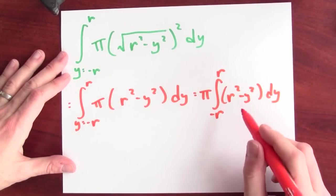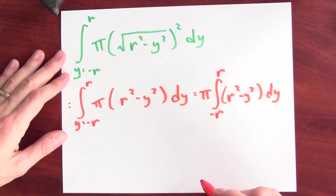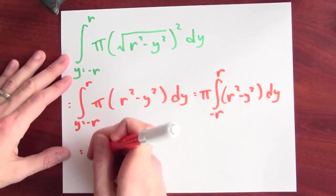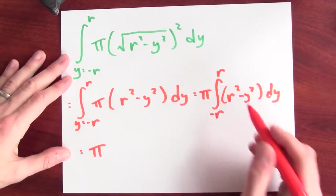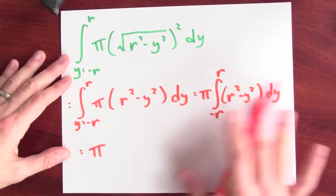Now, I've got to cook up an anti-derivative of this. I need to use the fundamental theorem of calculus. This will be pi times, what's an anti-derivative of just r squared? r is just a constant here.